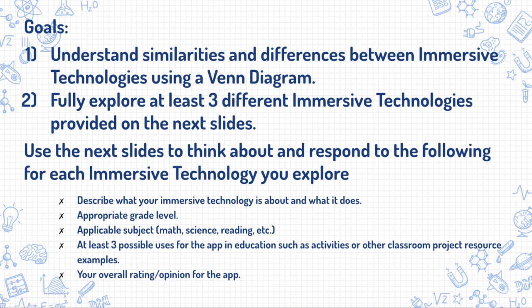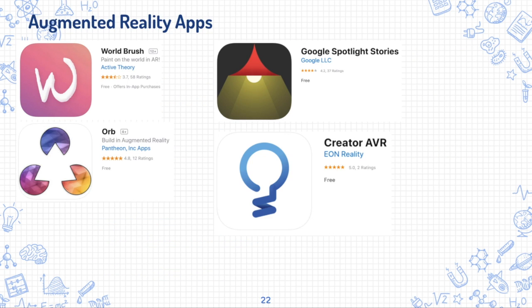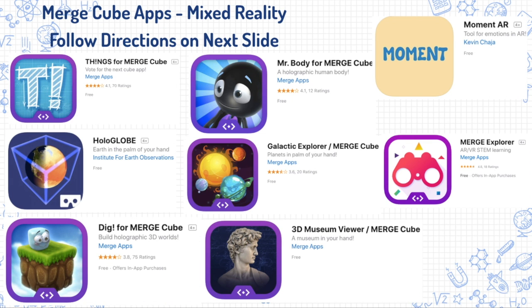Your ultimate goal is to understand the similarities and differences between immersive technologies using a Venn diagram, and to fully explore at least three different immersive technologies provided on the next slides. For each immersive technology you explore, describe what it is about and what it does, a possible appropriate grade level, applicable subject area, at least three possible uses such as activities or classroom projects, and your overall rating for the app. You're going to choose one augmented reality app — such as World Brush, Orb, Google Spotlight Stories, or CreatAR — and then choose two different Merge Cube apps to download and explore.